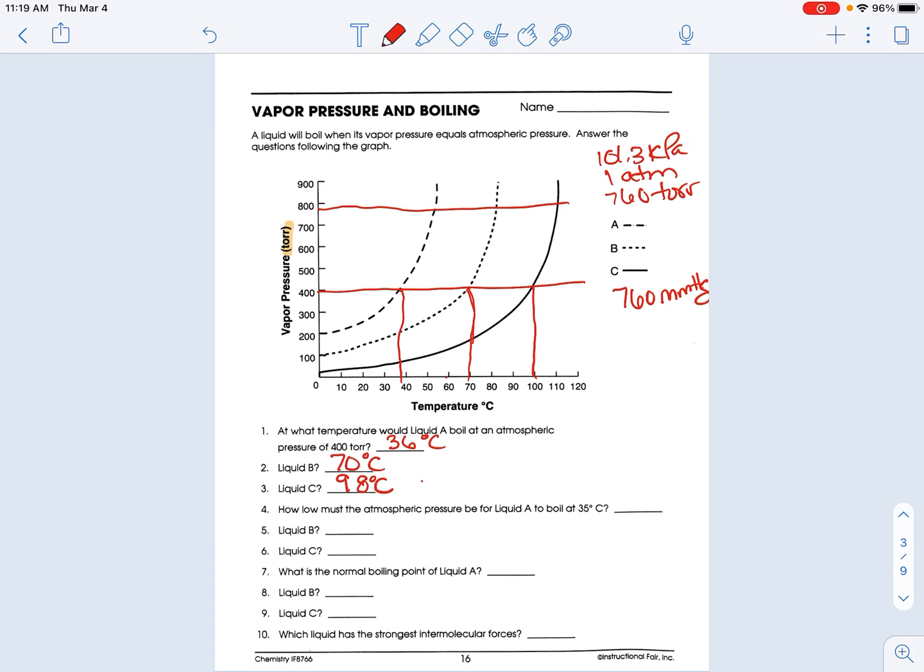How low must the, and let me erase it now. How low must the atmospheric pressure be for liquid A to boil at 35? So here's 35, I travel up as straight as I can get it. Not great. I think it's a little bit higher than that. I'm going to say like maybe 380, 390. It's not great. And this is torr.